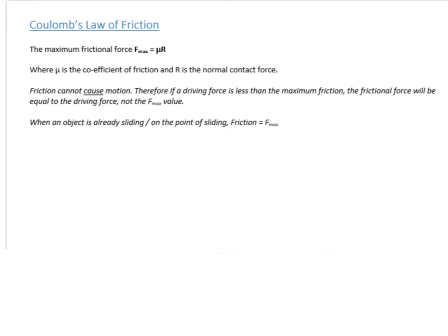So, Coulomb's law of friction. So we have the mu, which is the coefficient of friction, multiplied by r, which is the normal contact force. And just a couple of key things to avoid problems later on. Always remember, friction cannot cause motion. So if you find that a driving force is actually less than this maximum friction value you've calculated, the friction will actually be equal to that driving force, not the F max. So it always resists a driving force, but it never actually will cause something to move. And another thing to think about is, if an object is sliding, or at the point of sliding, that's telling you the friction at that point is that F max value, and you'll come across the point of sliding thing a lot.